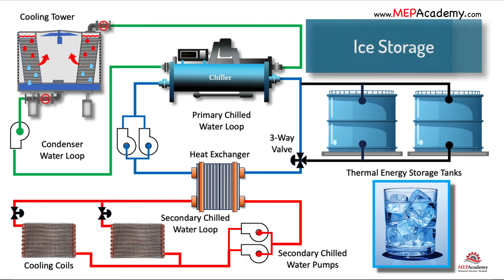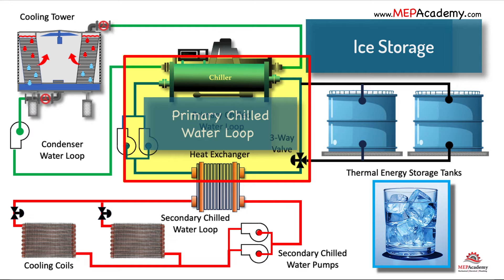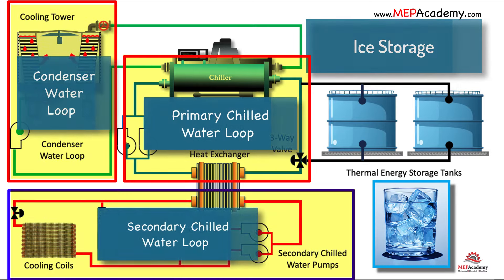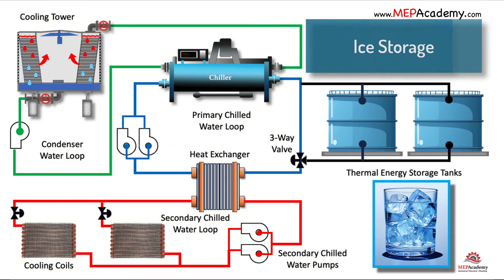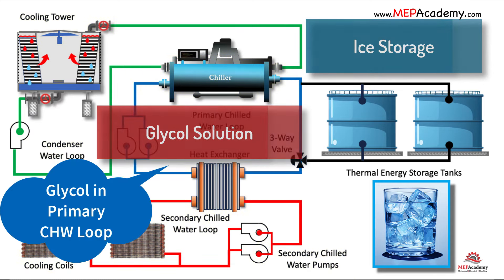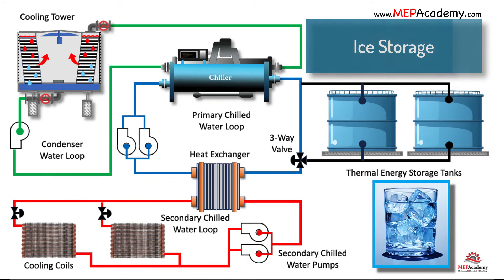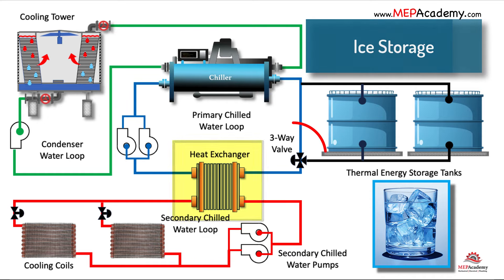In this image, we have the same water loops as the chilled water storage tank system: the primary chilled water loop, condenser water loop, and secondary chilled water loop. The difference with this system is that a glycol solution will circulate through the system in order to produce ice on the coils within the tanks. Glycol prevents the water from freezing. A heat exchanger will separate the primary and secondary loops, and the three-way valve and control sequence will control the flow of water to and from the tank.